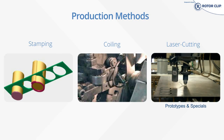RotorClip has three main production methods: stamping, coiling, and laser cutting. Stamping is often used for rings two inches and below and is a faster production method than coiling or wire forming; however, you do end up with more scrap. That's why at above two inches we switch to coiled and wire-formed parts, which have a slower speed but less scrap — resulting in lower prices for us and for our customers. We also have laser cutting equipment for prototypes and specials. If you have an odd shape that isn't easily tooled, or low quantities where tooling isn't justified, we can still help. We can make prototypes so you can test the part prior to investing in tooling or a full production run.